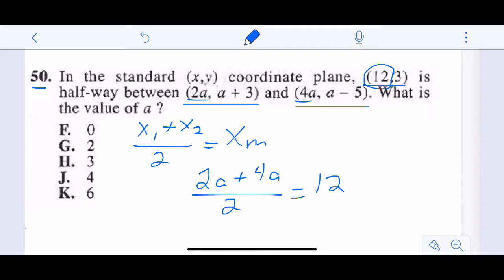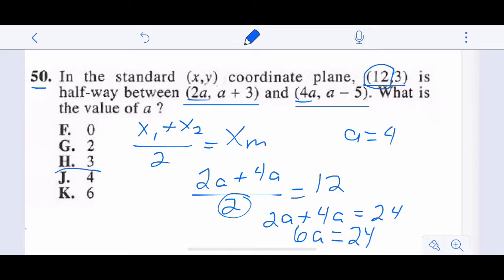So we're going to just do algebra on top of that. So 2 times 12, we're going to multiply the 2 out. So we have 2A plus 4A equals 24. Now we have 6A equals 24. Divide by 6, we get A equals 4. And there's our answer. Good day.